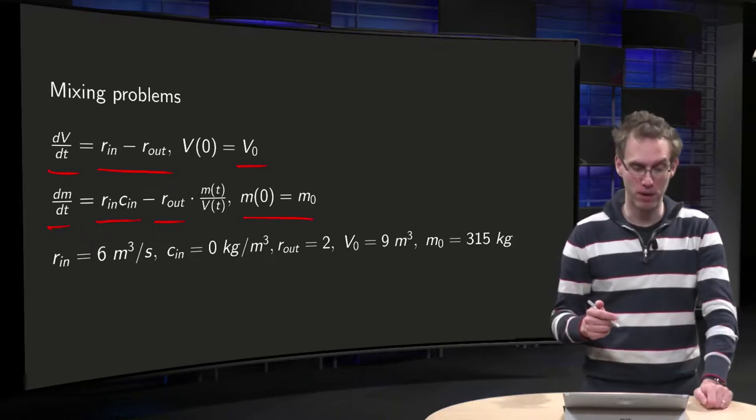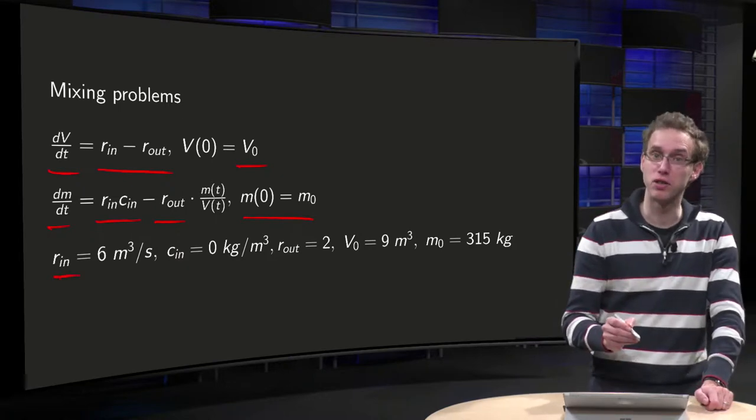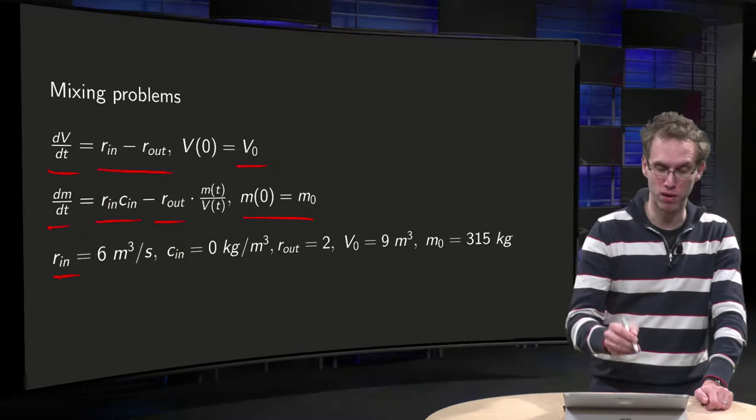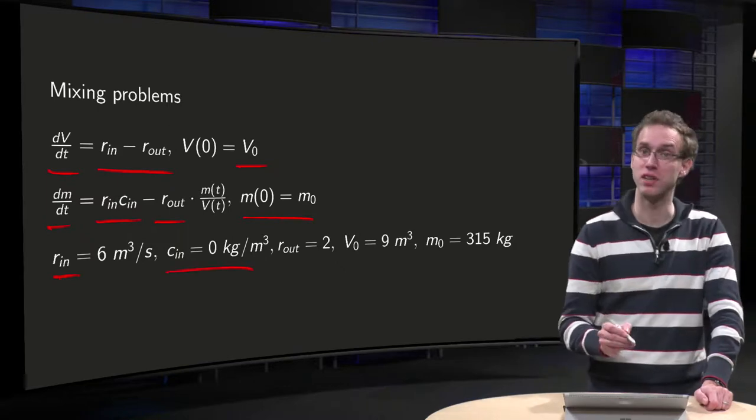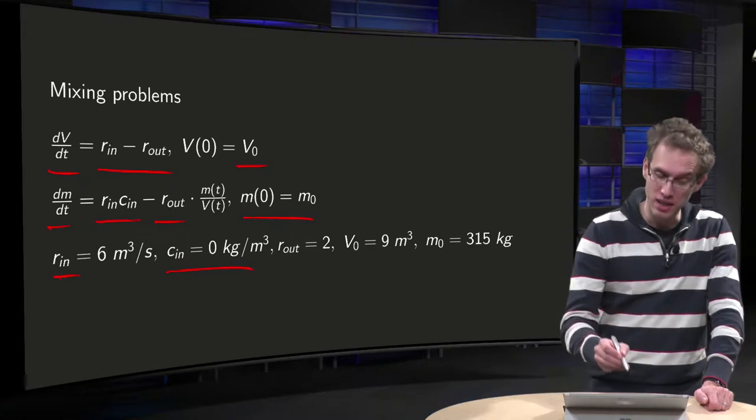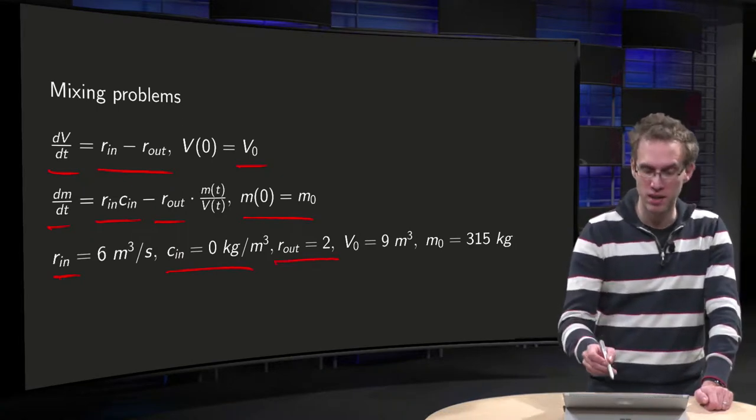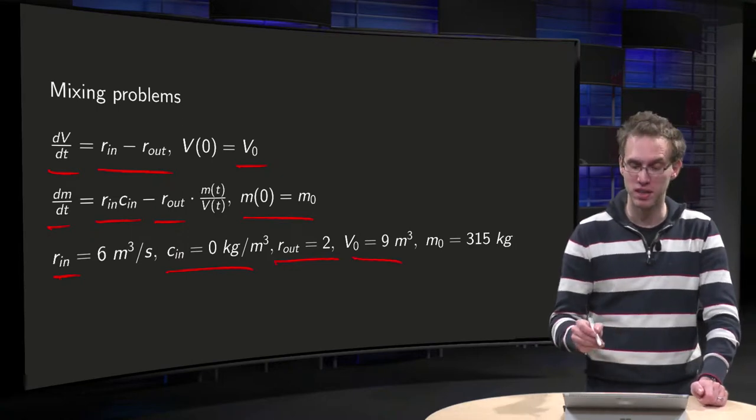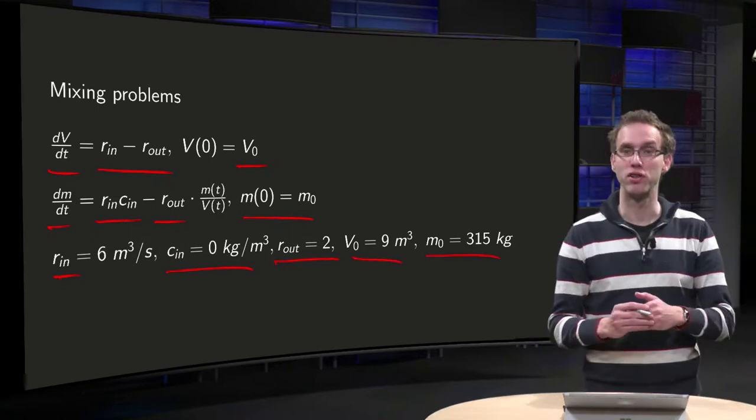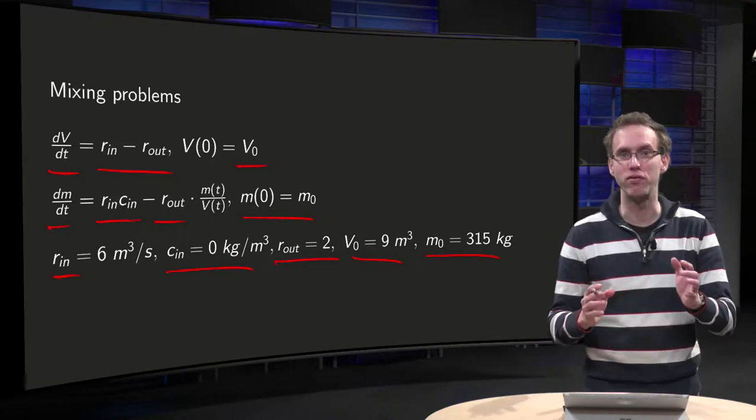Now we need to specify our parameters. So we take as rate in 6 m³ per second with no inflow of salt, so pure water, so we take c_in to be 0 kg per m³. Rate out, we just take 2 m³ per second, some initial volume of 9 m³, and some initial mass of salt of 315 kg. Wow, that looks like a lot of salt, 315 kg.